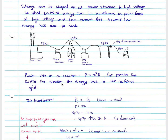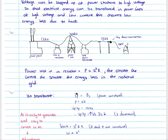We lose less power to the national grid and therefore have more power to be used by appliances in houses, businesses, etc. In your transformer, the power of your primary equals the power of your secondary — power is constant. P = VI from your formula sheet, so VpIp = VsIs, and as we increase our voltage on our secondary we decrease our current.